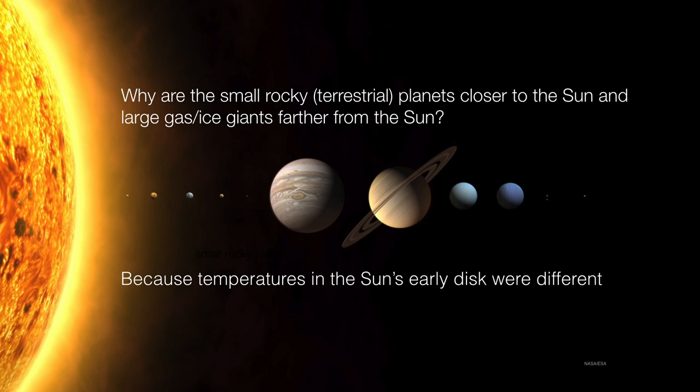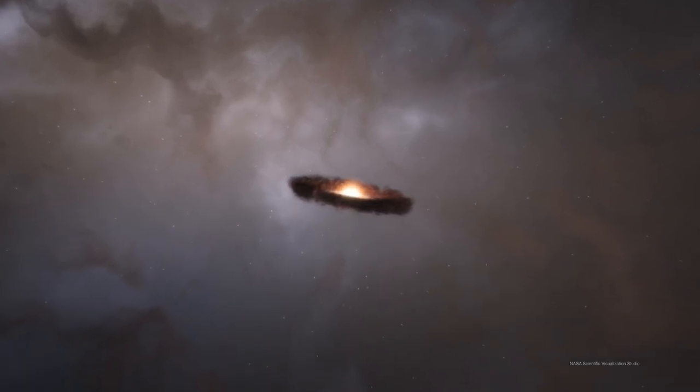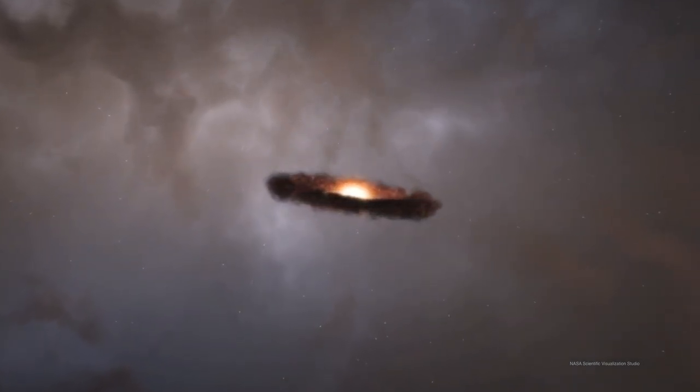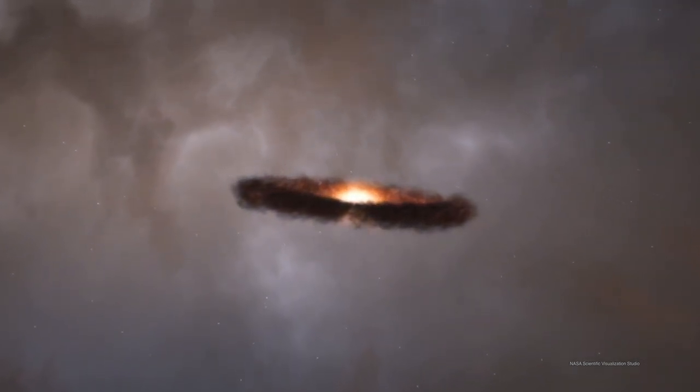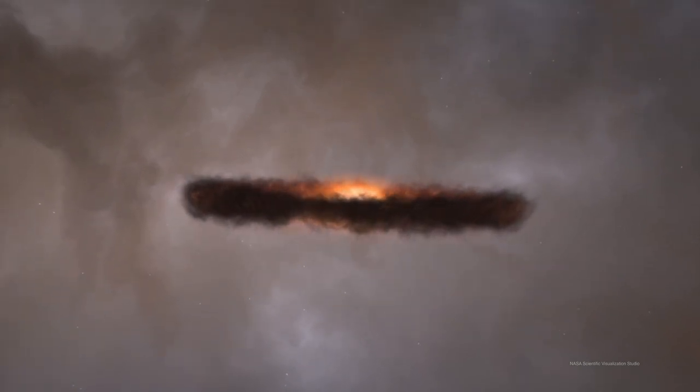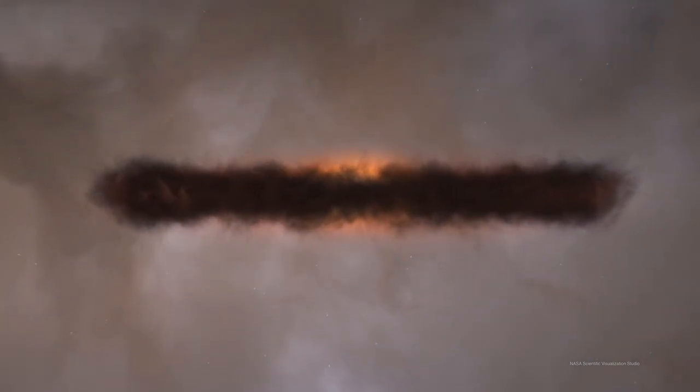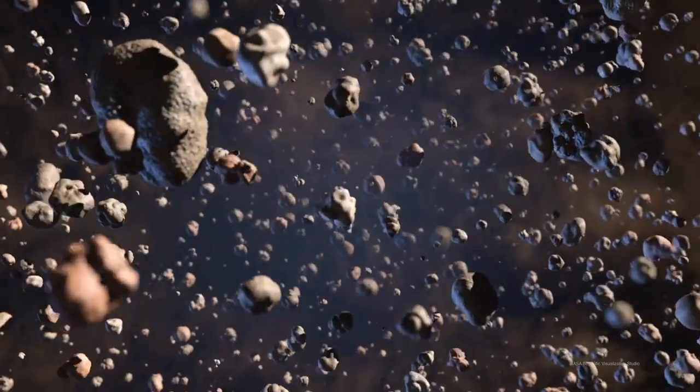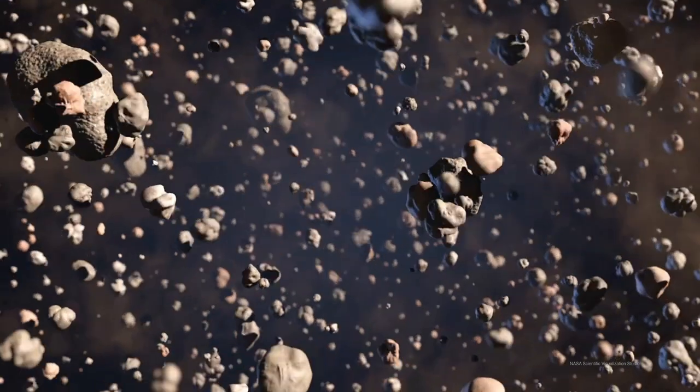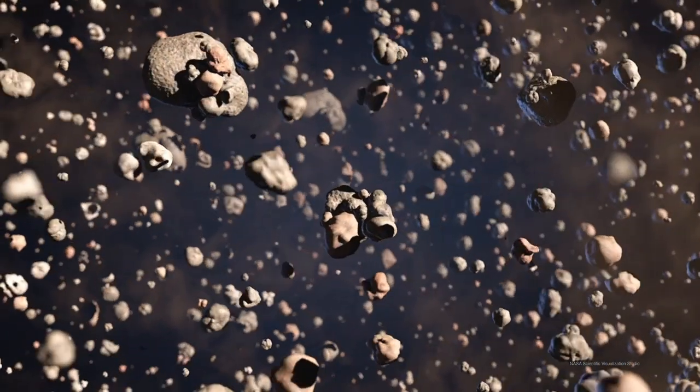So how does a spinning disk of gas and dust go on to become planets? Well, in order for us to think about that, we have to change our perspective. We have to go deep inside the circumstellar disk. And instead of thinking about the disk as a whole, we need to change our scale and get smaller and smaller until we are finally at the scale of individual grains of dust. So, these dust particles will go on to become planets. Here's how they do it.